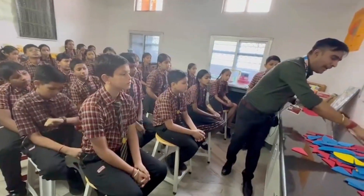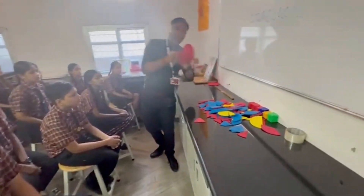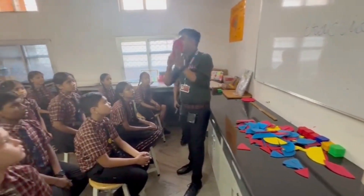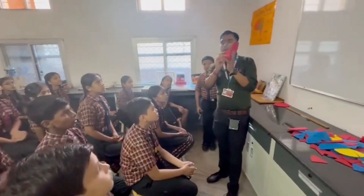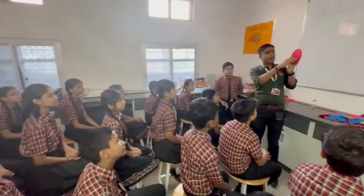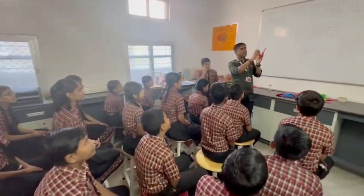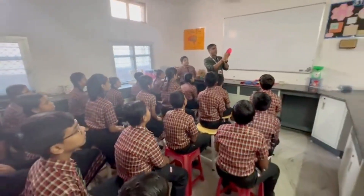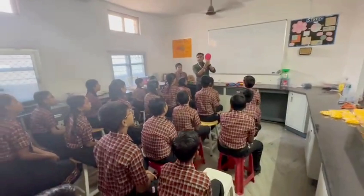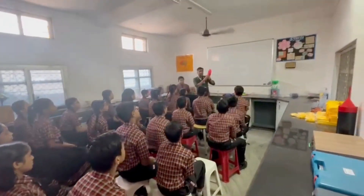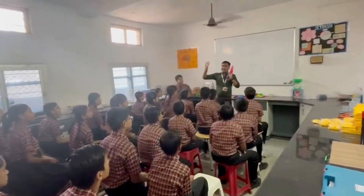Similarly, if I make four parts — suppose I have cut the circle into four equal parts — now what is the value of one part? One by four. Four parts.